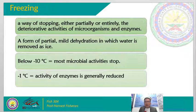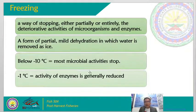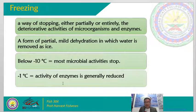Freezing is also a form of partial mild dehydration in which water is removed as ice. Later on, we will discuss the stages of freezing and why moisture turns into ice in the form of crystallization. Furthermore, freezing involves lowering the temperature to below negative 10 degrees Celsius, wherein most bacterial activities are hampered. At negative 1 degree Celsius, all enzyme activities are generally reduced.